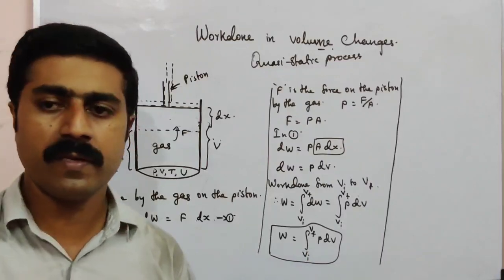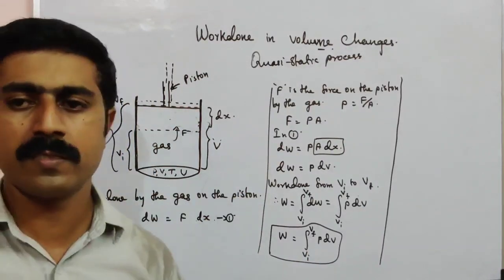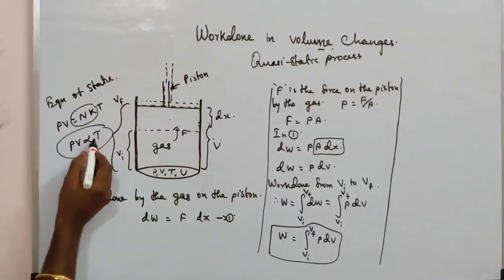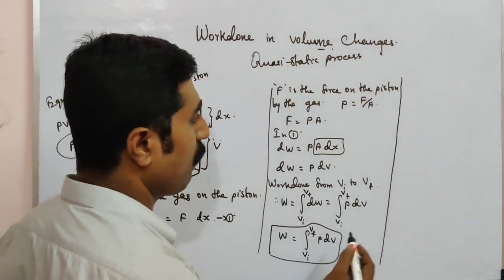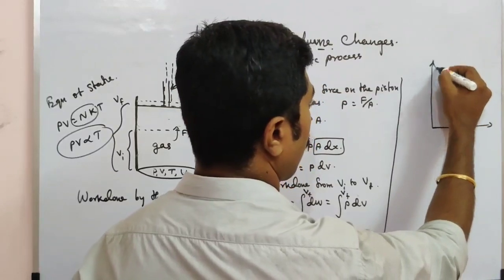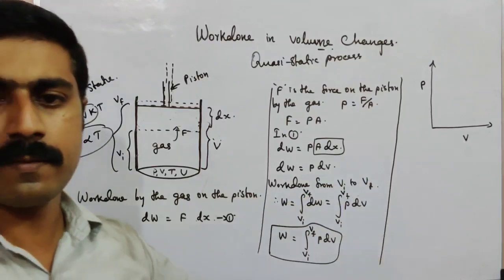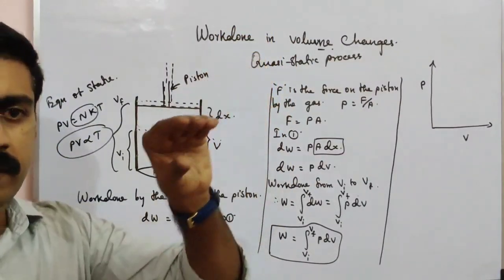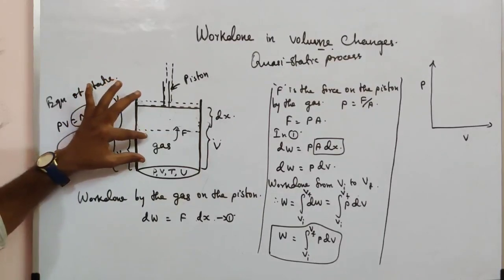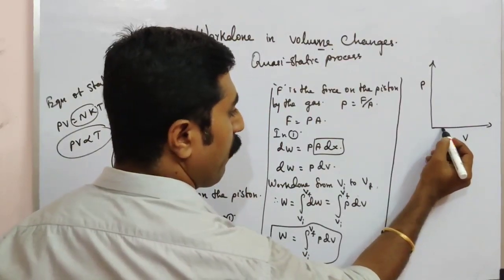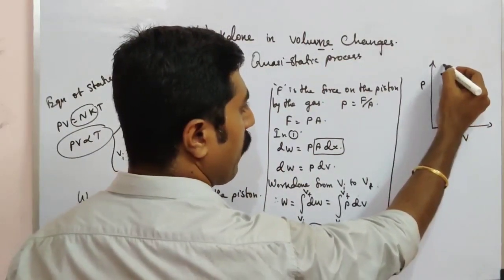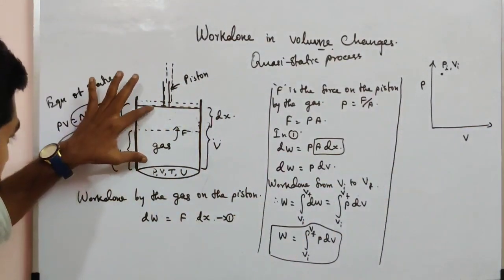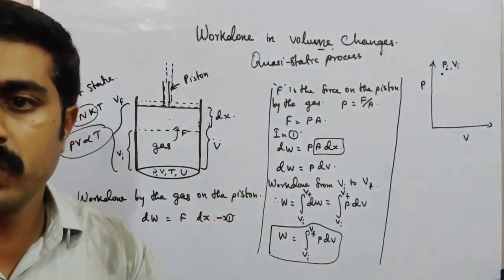The pressure in the integration depends on the process — this is a quasi-static process, so pressure relates to volume and temperature via the equation of state. On a PV diagram, pressure is on the Y-axis and volume is on the X-axis. When volume is low (minimum), pressure is maximum — that is the initial state Vi. As volume increases, pressure decreases.